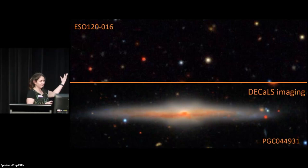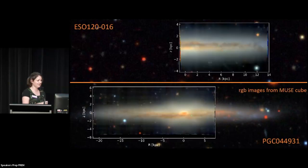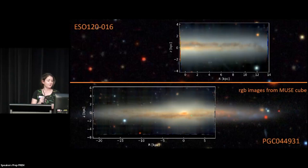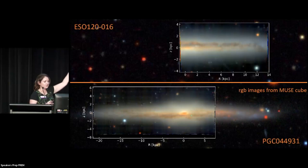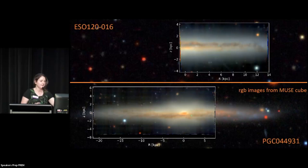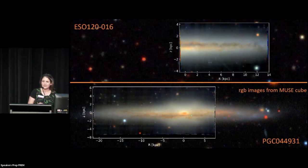Here's a DECaLS image of PGC 44931. I'm going to overlay the reconstructed three-color images of the MUSE cubes. The most exciting thing about this is that the MUSE cubes are deeper than the DECaLS imaging — you can see extra stuff.